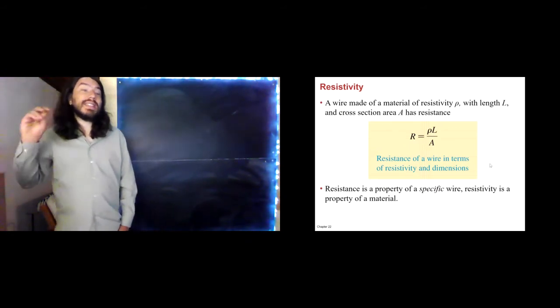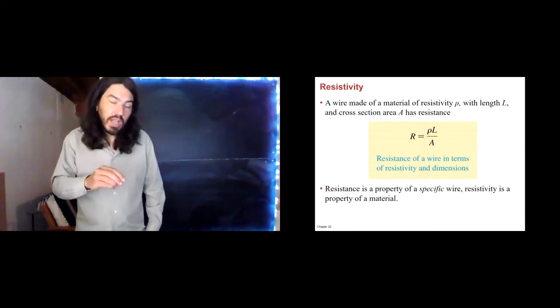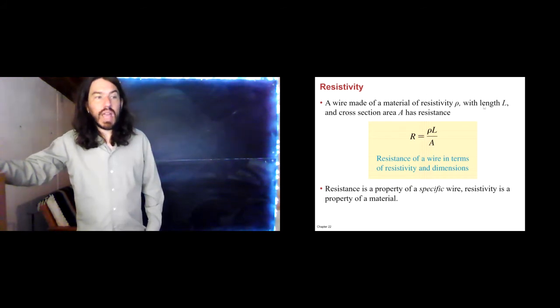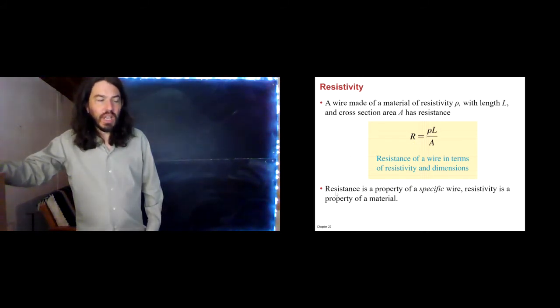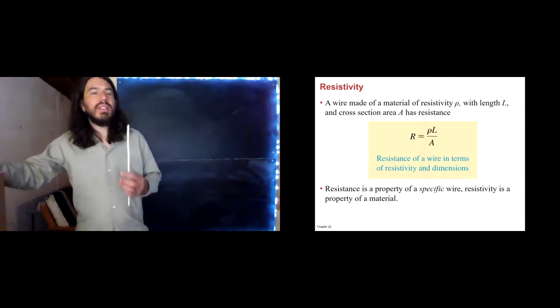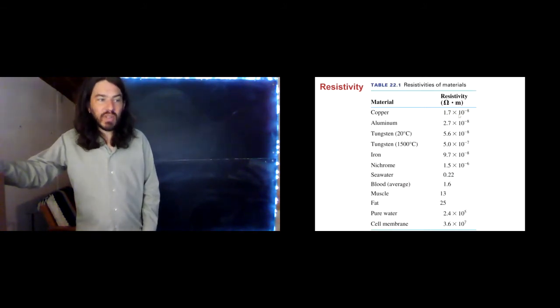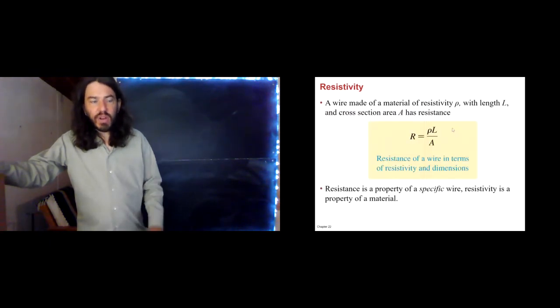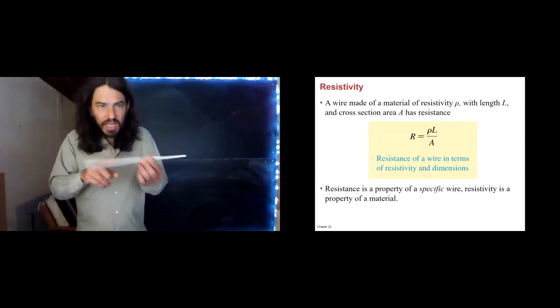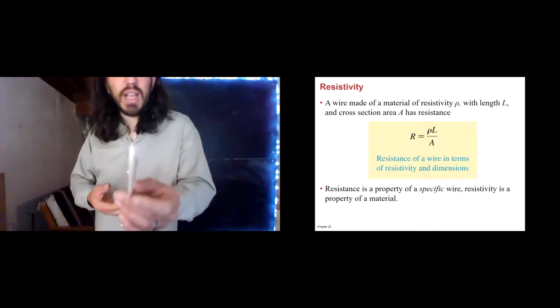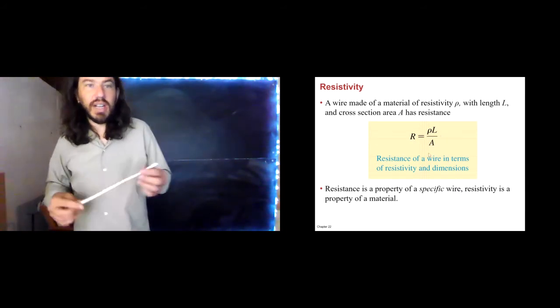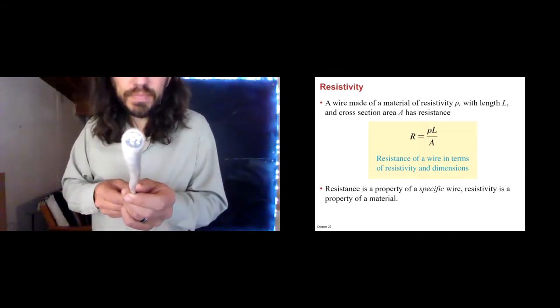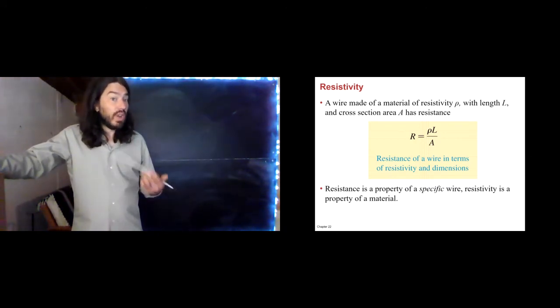Okay. So, how do we connect the resistivity of a substance to the resistance of a particular object? We need this equation here. A wire made of a material of resistivity rho has a length L and a cross-section A, and that gives it a resistance given by this equation. R is rho L over A. So, resistance is a property of a specific wire, and resistivity is a property of a material. So, for example, we could talk about what is the resistivity of aluminum in general, and I could look it up. And if I had 10 pieces of aluminum, they would all have the same resistivity. Now, that's different from what is the resistance of this particular wire. If I wanted to know the resistance of this particular wire, I could measure its length, I could measure its cross-sectional area, and then I could calculate its resistance. Again, A is the cross-sectional area. So, for a standard wire, that is a circular shape.